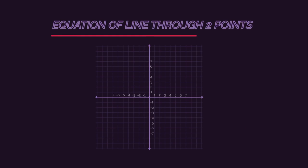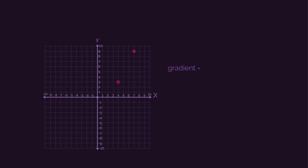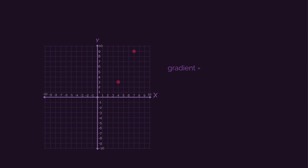So we want to find the equation of the line that passes through these two points. So we start by finding the gradient of the line. We have our standard gradient equals rise over run, or change in y over change in x equations.